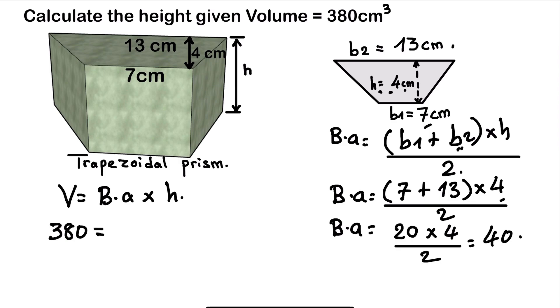So now that we have the base area, we just need to plug it here. Then we'll be able to calculate the height. So our base area is 40. So we have 40 times h. So 40 times h is the same as 40h. We can write it as 40h. So 40h should be equal to 380.